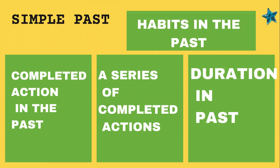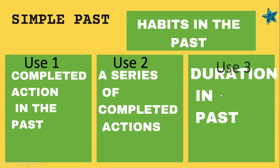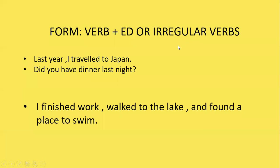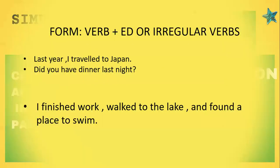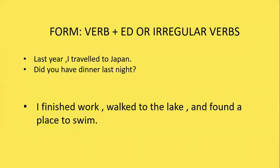The very first tense is simple past. When to make use of simple past: the first usage is to talk about completed actions in the past, the second is to talk about a series of completed actions, the third is to talk about duration in the past, and the fourth usage is to talk about habits in the past. The sentence structure for past tense is verb plus -ed, or irregular verbs.